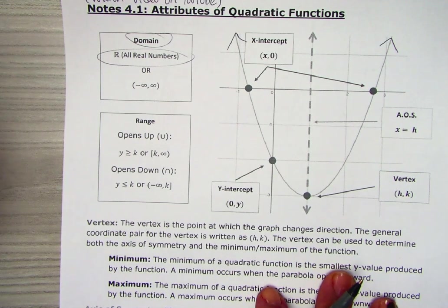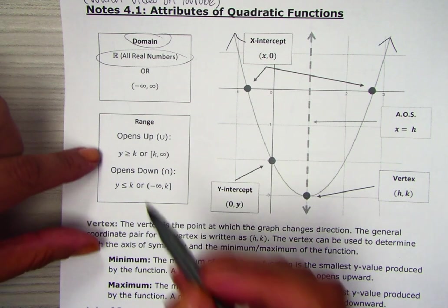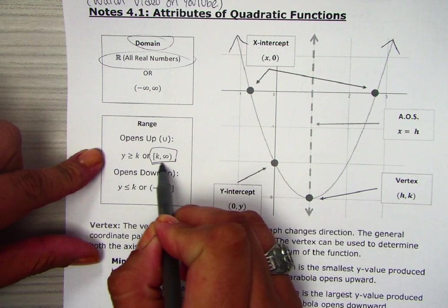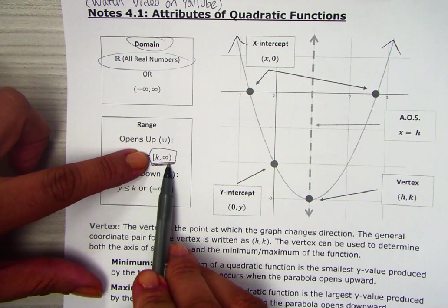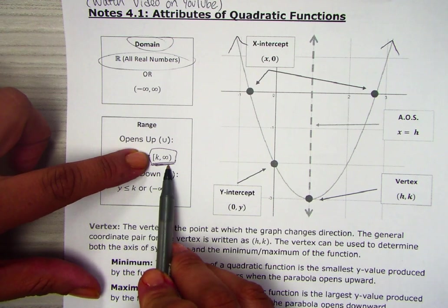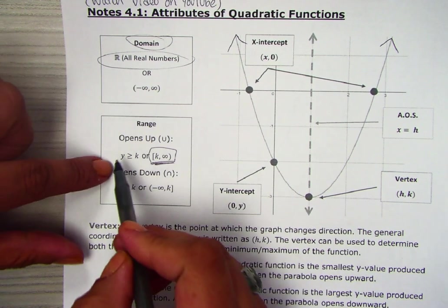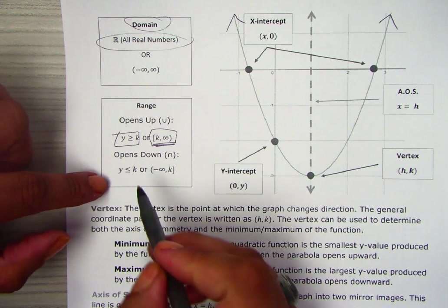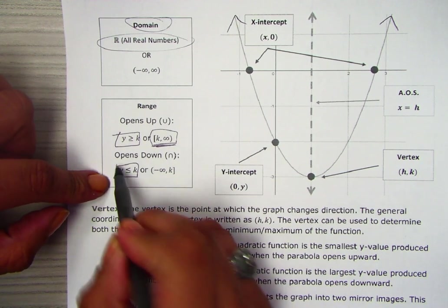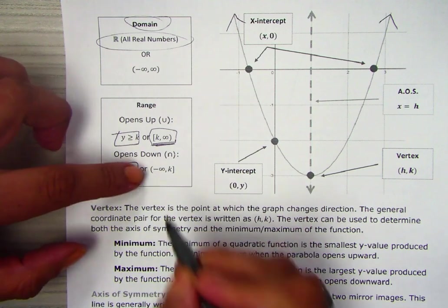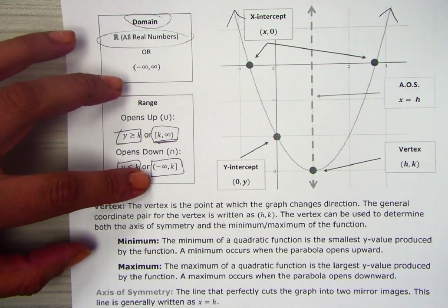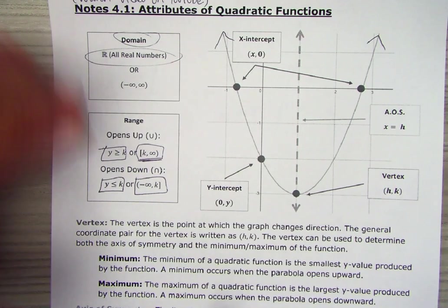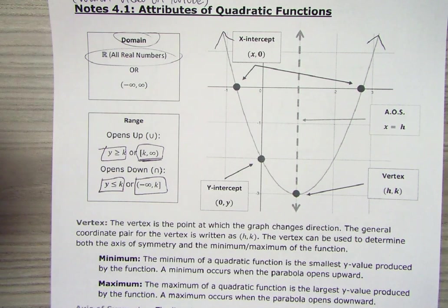For the range, you will have a u-shape that either opens up or down. If it opens up, you write interval notation touching a number going to infinity — you can also write it as y is greater than a certain number. If it opens down, you write that y is less than that certain number, or the interval notation will be negative infinity up to that number.